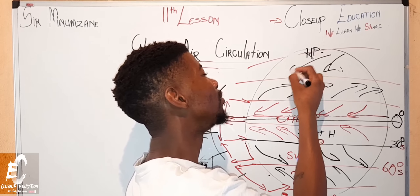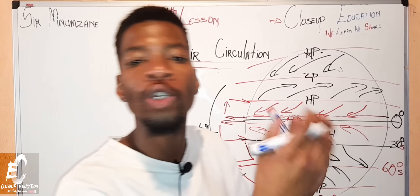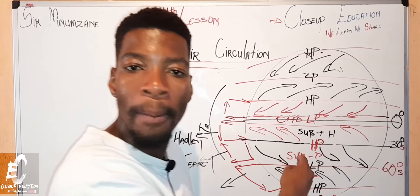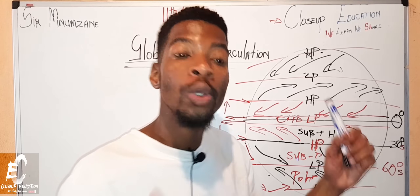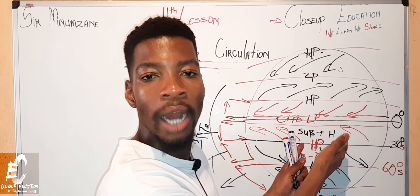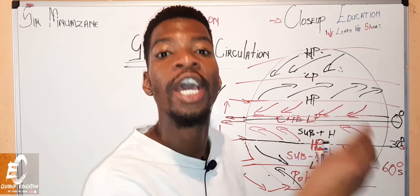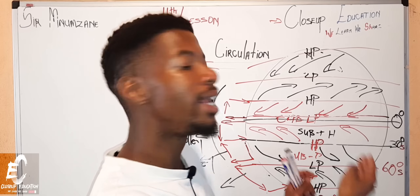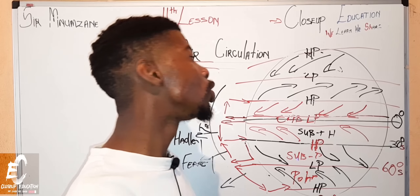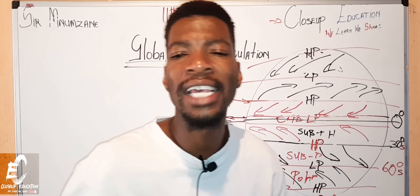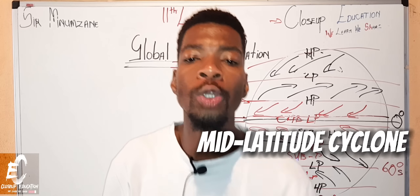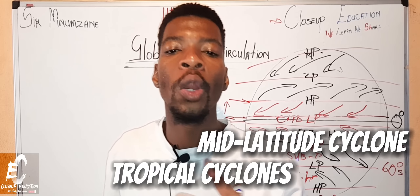That is how you draw and understand global air circulation: you need the cells, the high and low pressure systems, and the wind belts — subtropical high between zero and 30, sub-polar low between 30 and 60, polar high between 60 and 90. Please subscribe and like the video, because next we are moving to mid-latitude cyclones and tropical cyclones.